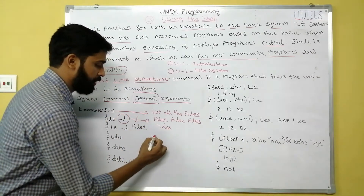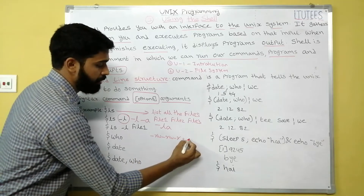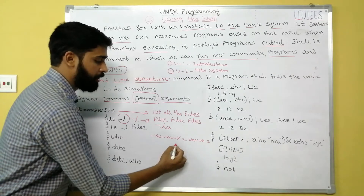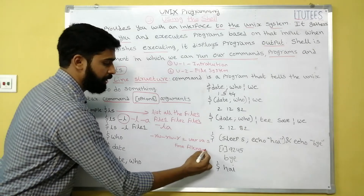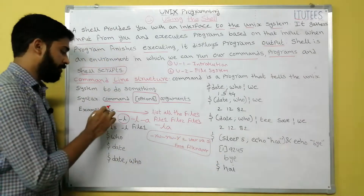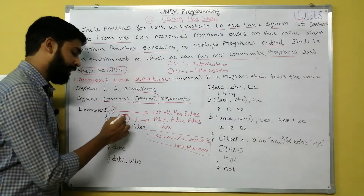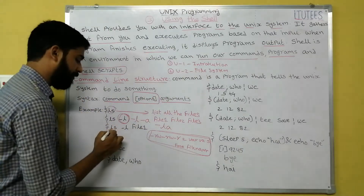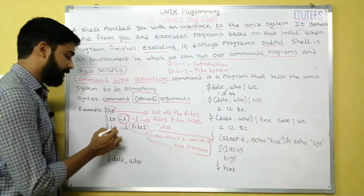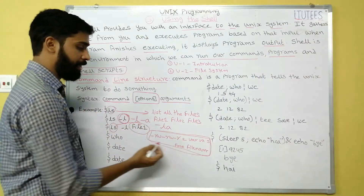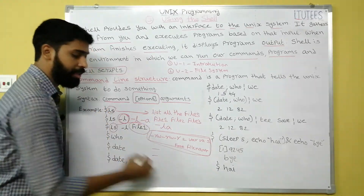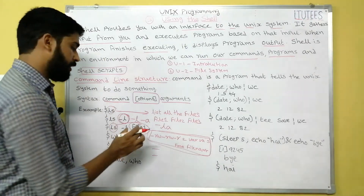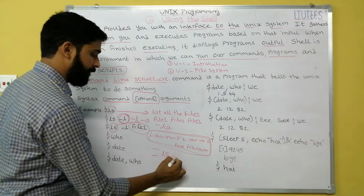ls -l means long listing of files — it displays link count, username, group name, size, last modified time, and file name. If you give 'ls -l file1', the command is applied only to file1, so you get only file1's details. ls -l without an argument shows all files. ls -l -a also displays hidden files.